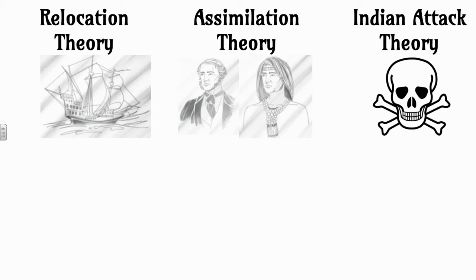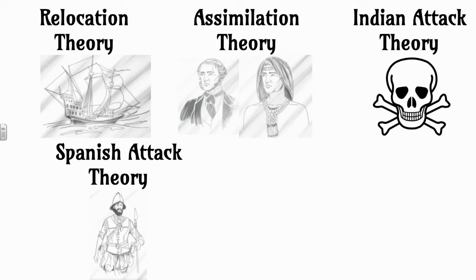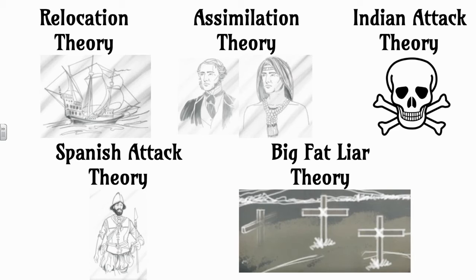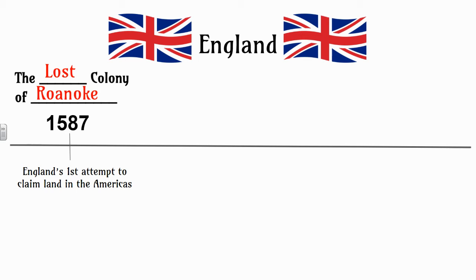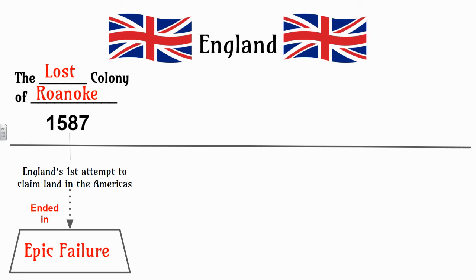We had 117 men, women, and children go missing on the island of Roanoke while John White was back in England trying to get more supplies. When he returned, the colonists were nowhere to be found. We talked about the relocation theory that they tried to leave and were lost at sea; maybe the assimilation theory that the colonists were starving and joined a friendly tribe, maybe the Croatoan tribe; or maybe they were attacked by local Native Americans like the Roanoke tribe. We also introduced the Spanish attack theory, and the big fat liar theory that maybe John White knew all along that they died and tried to cover it up. Regardless, England's first attempt — the lost colony of Roanoke — ended with an epic failure.